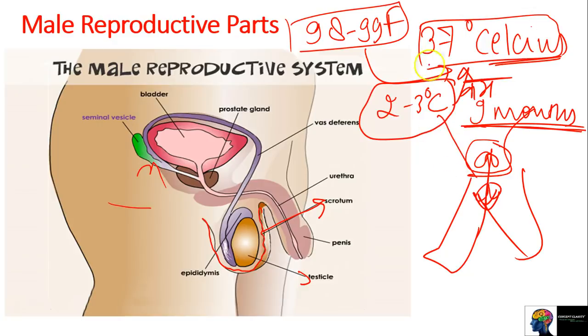Sperms develop at a slightly cooler temperature. They cannot develop at the body's core temperature, which is why the testicles are outside. That was some factual information.